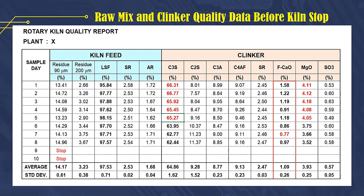We can conclude that if the MGO content is greater than 4% and it lasts for several days, as shown in this data, it can cause the formation of thick coating in the kiln and ultimately cause the kiln to stop.